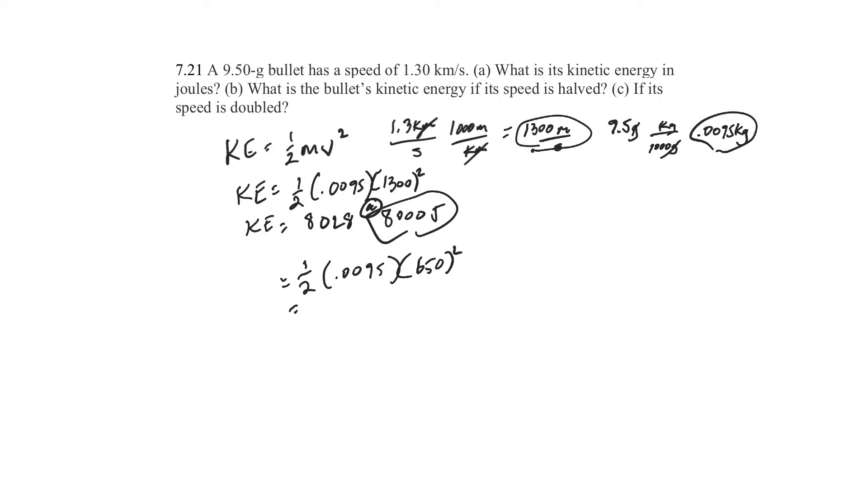And 650 squared would give you 2,007, which would reduce to 2.0 times 10 to the 3. So what's happened? I went from 8,000 to 2,000. This is part B.